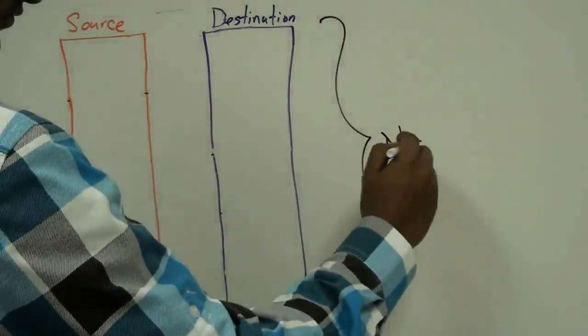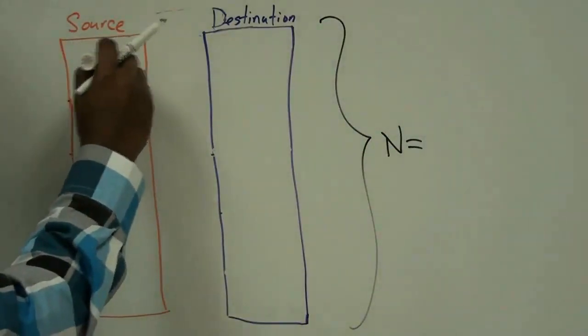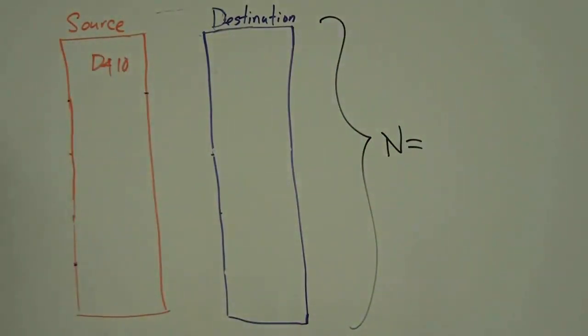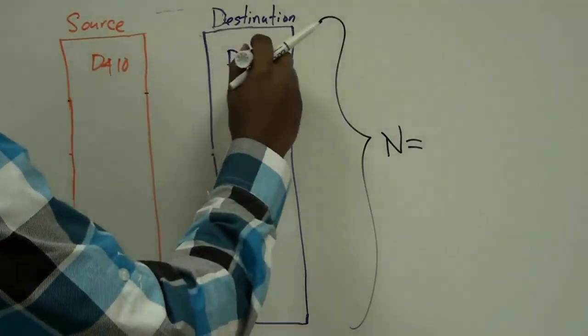So, for the left column, we start with register, say, D410. And for the right column, we start with register D420. And for both columns, N equals 5.